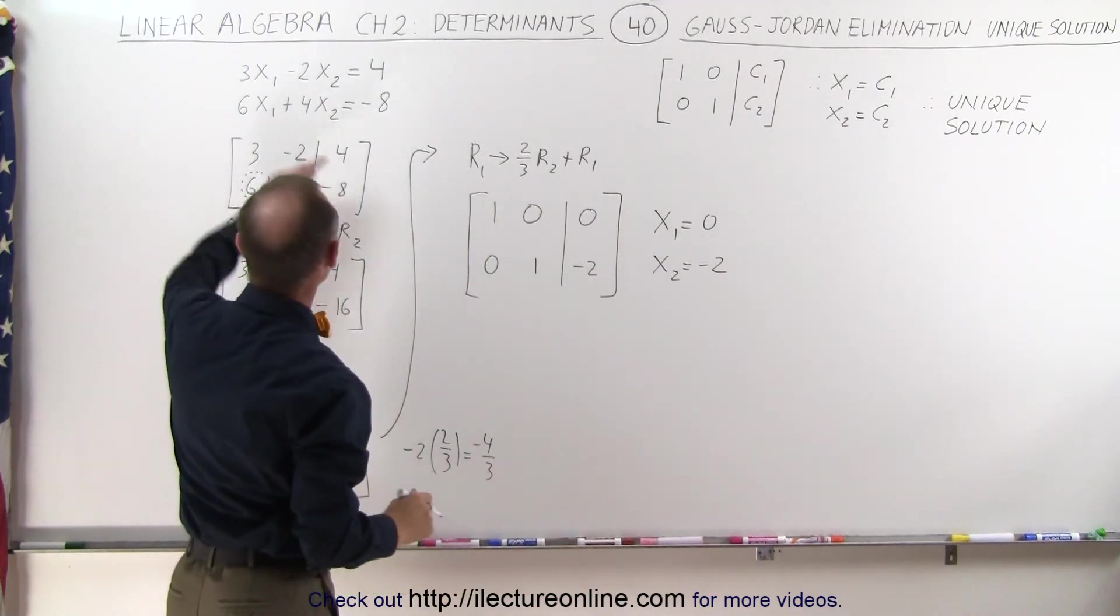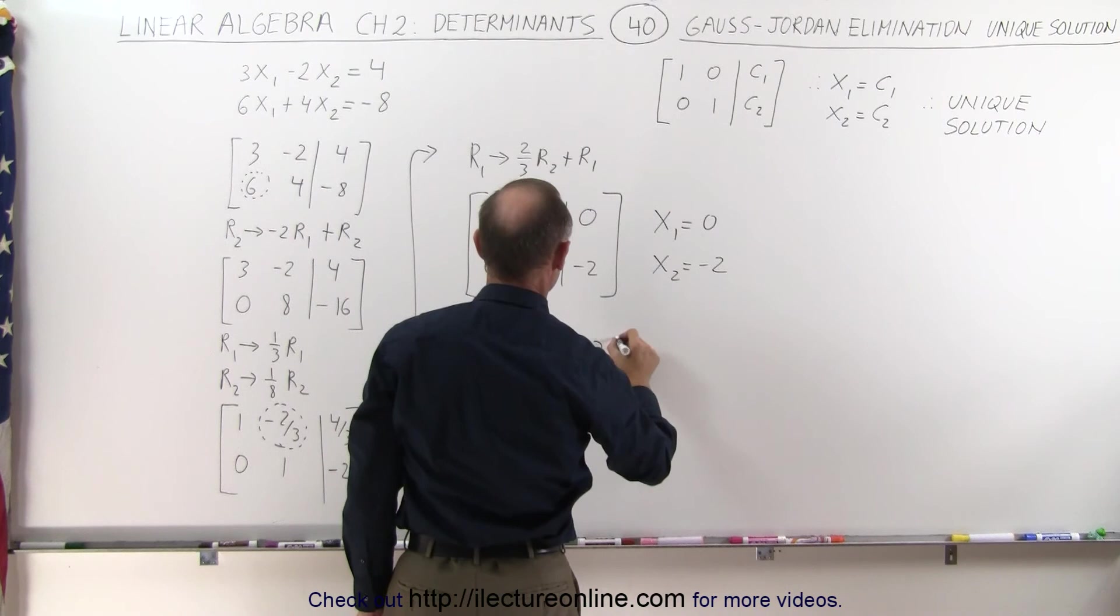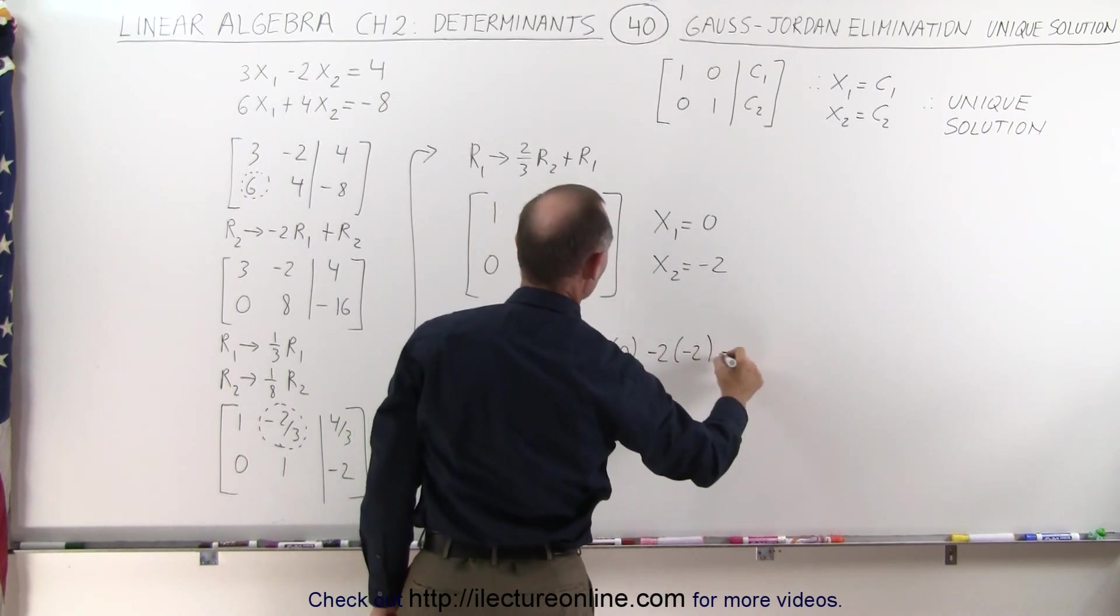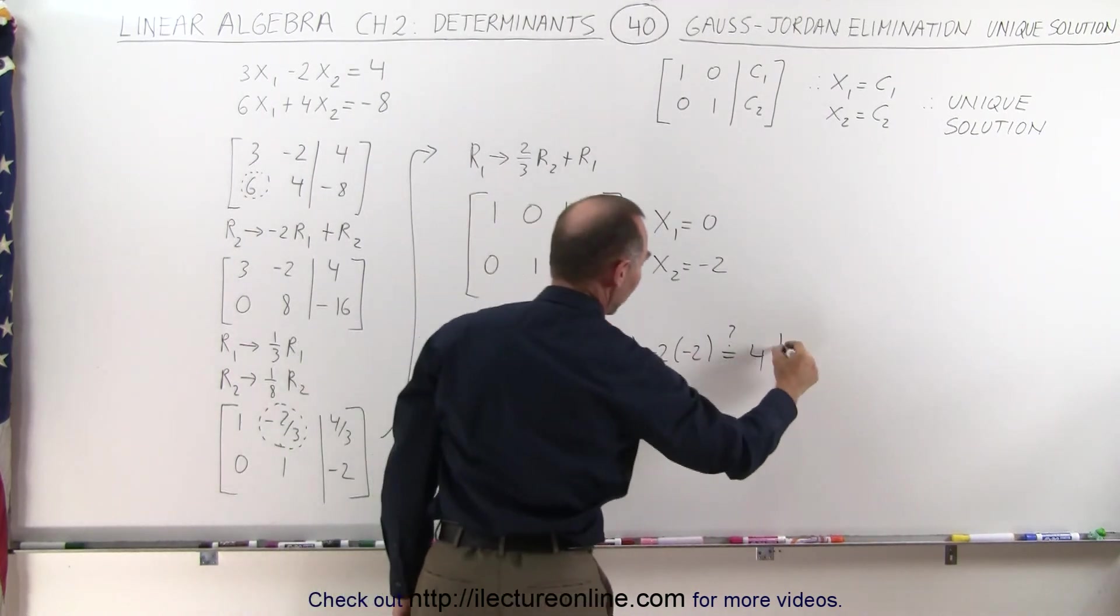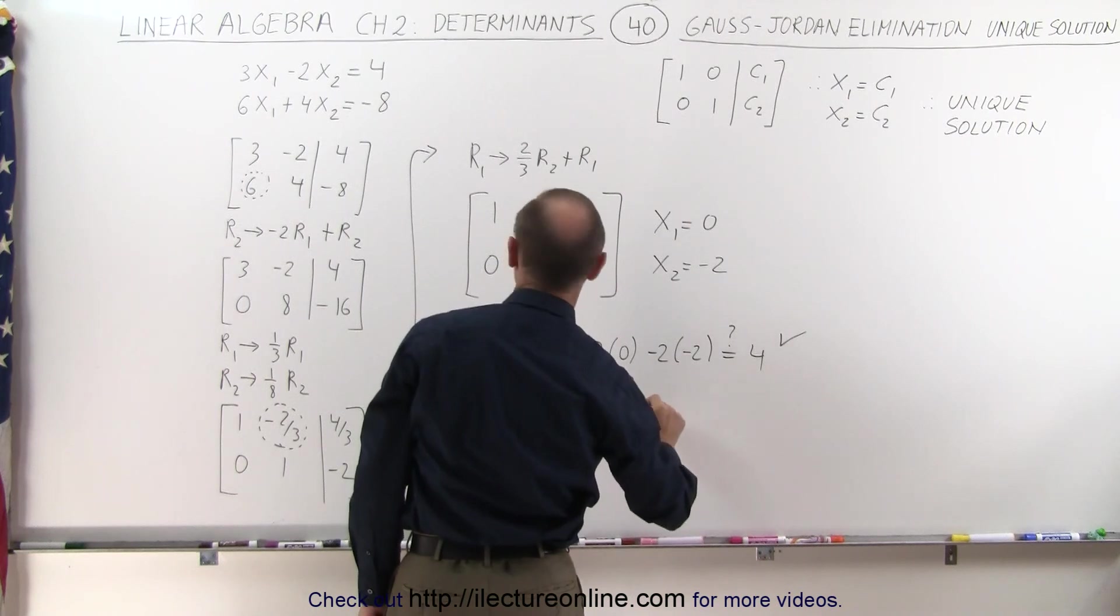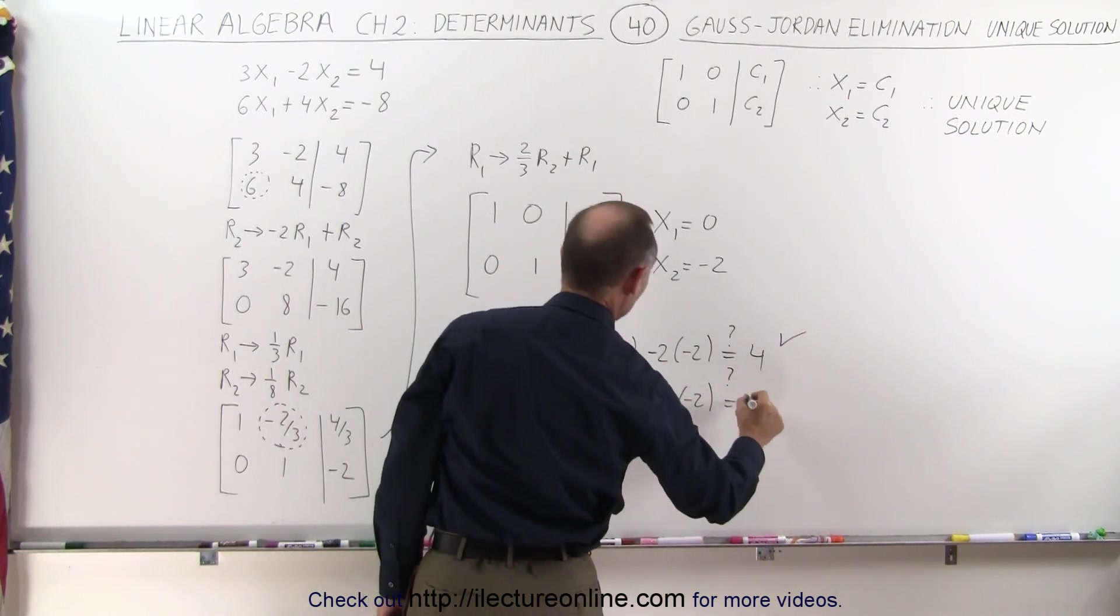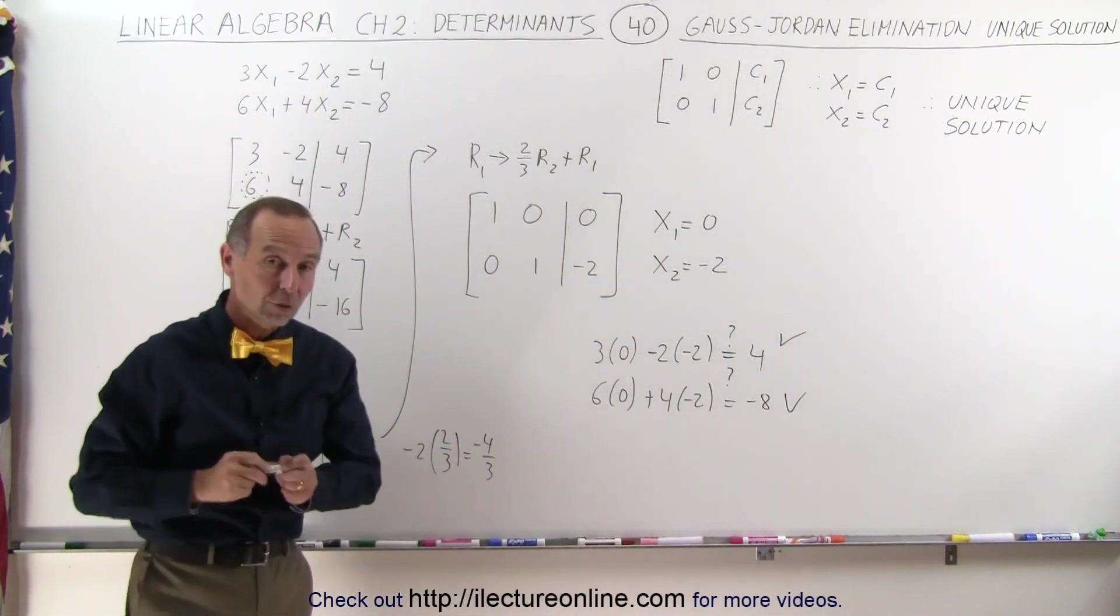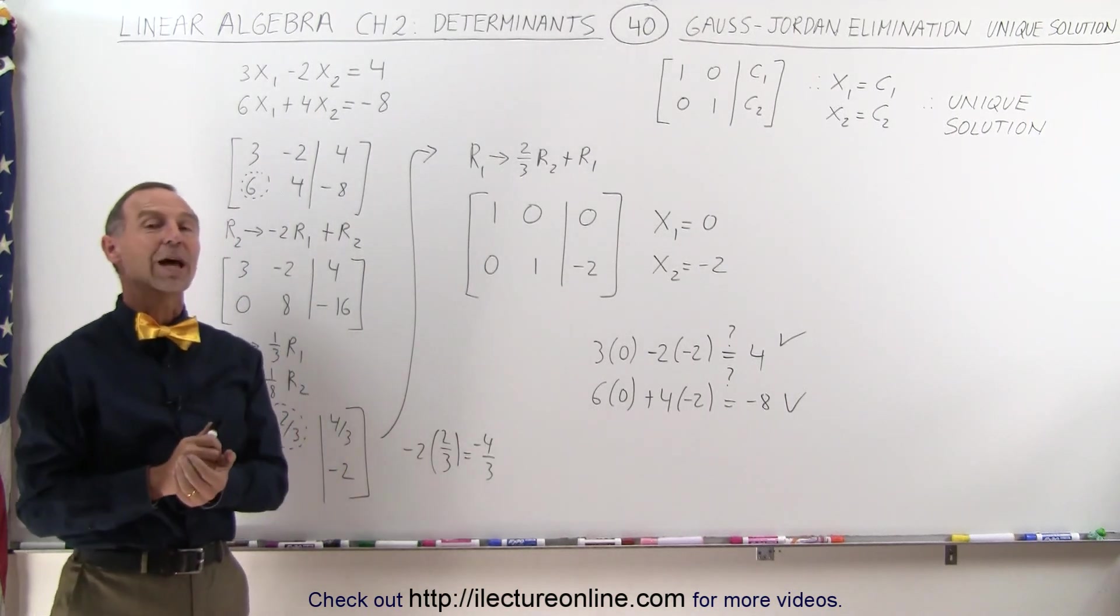We can check to see if that's correct by plugging those values in and see what we get. Our first equation: 3 times 0 minus 2 times negative 2. Is that indeed equal to positive 4? And the answer is yes, so that checks. And the second equation: 6 times 0 plus 4 times negative 2. Is that indeed equal to negative 8? And the answer is yes.